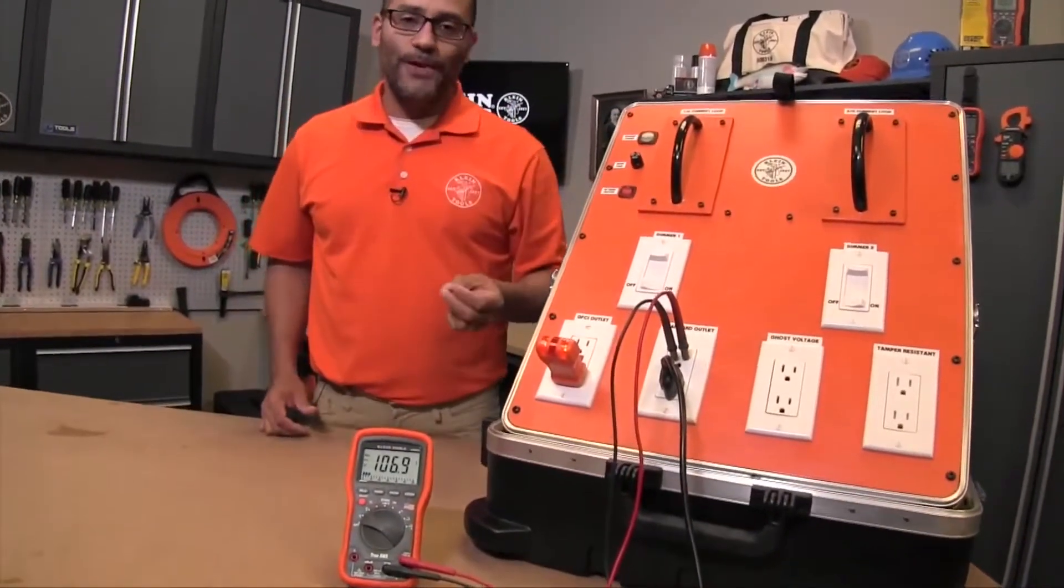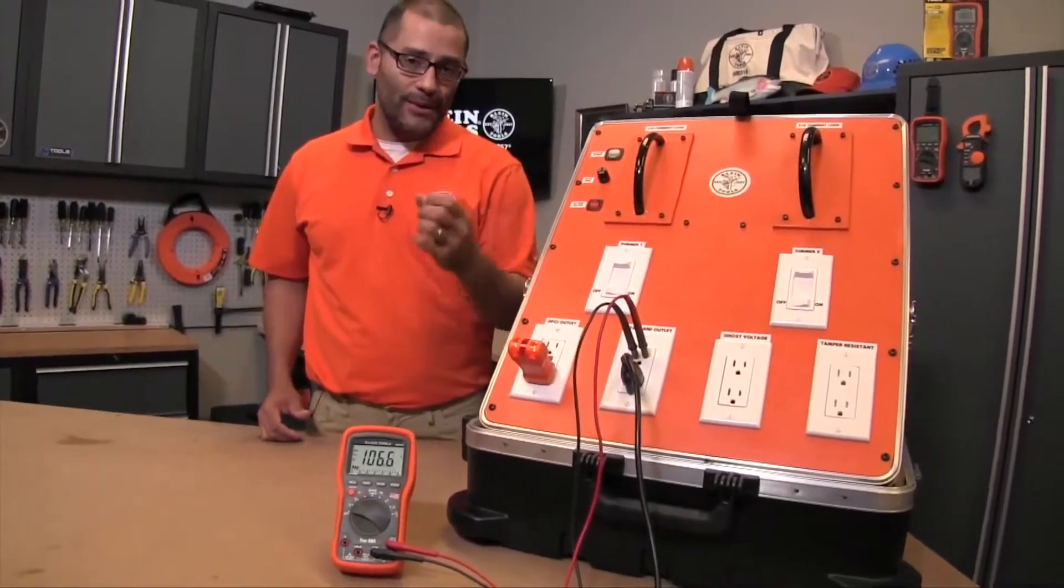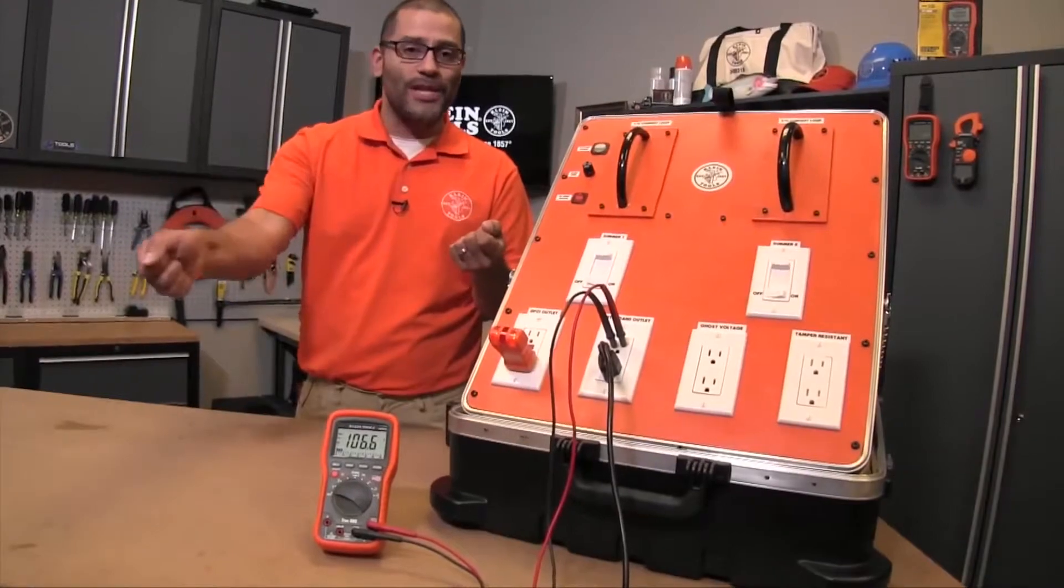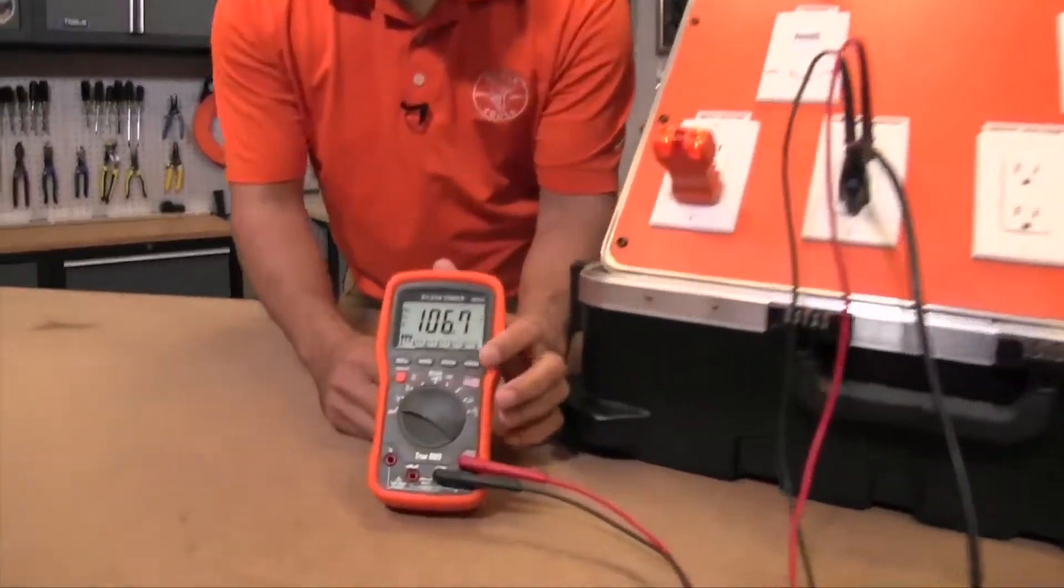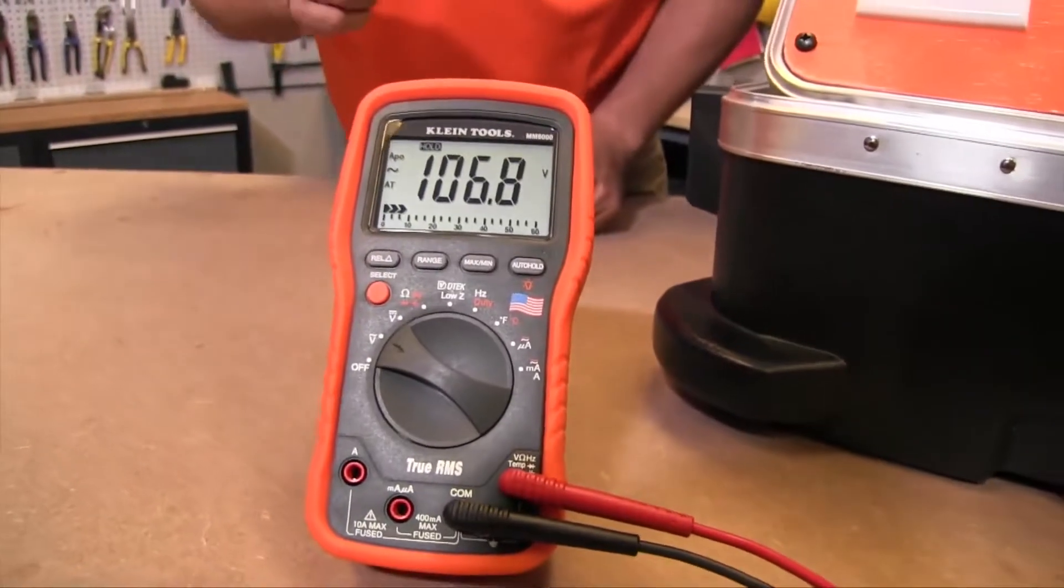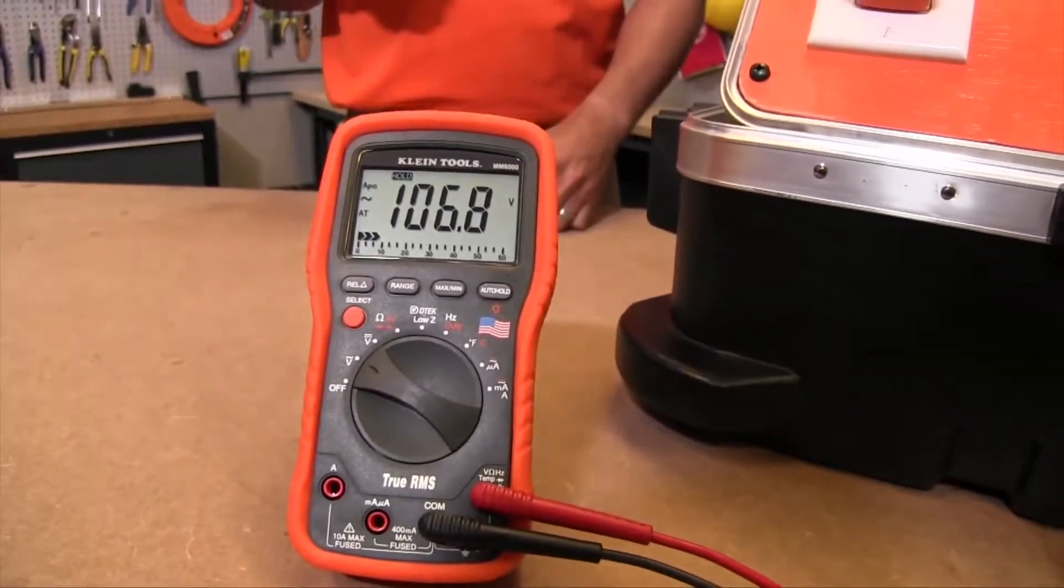So with the hold feature, the hold is designed to capture that reading that you see on the screen. So you're taking your measurement, you've got the meter in front of you, you hit the hold button, so right here you see hold pops up and it locks in the voltage at one hundred and six point eight volts.